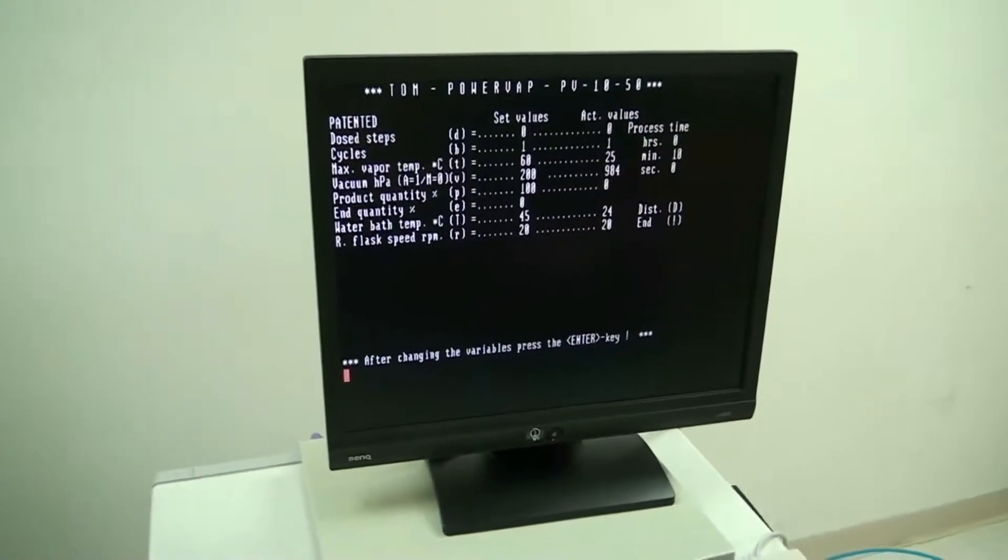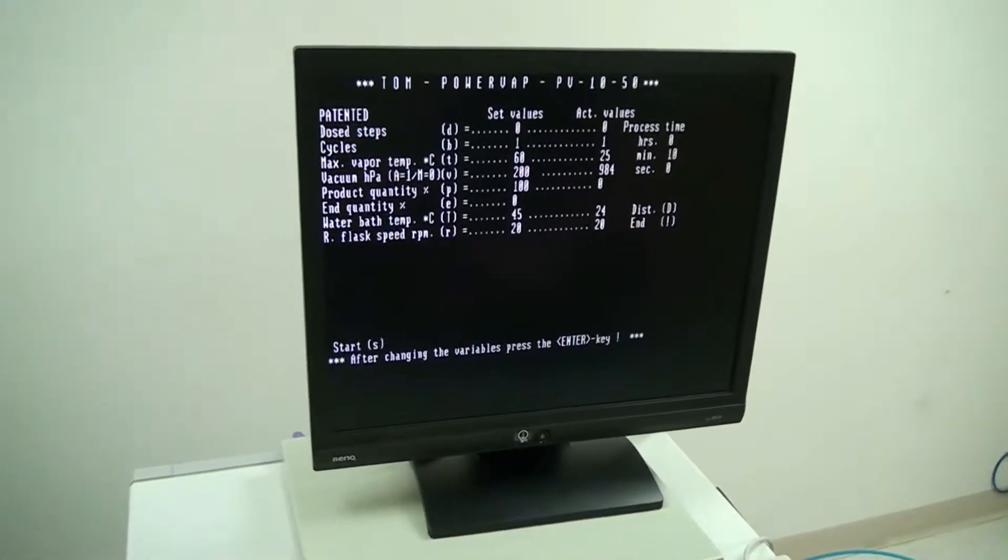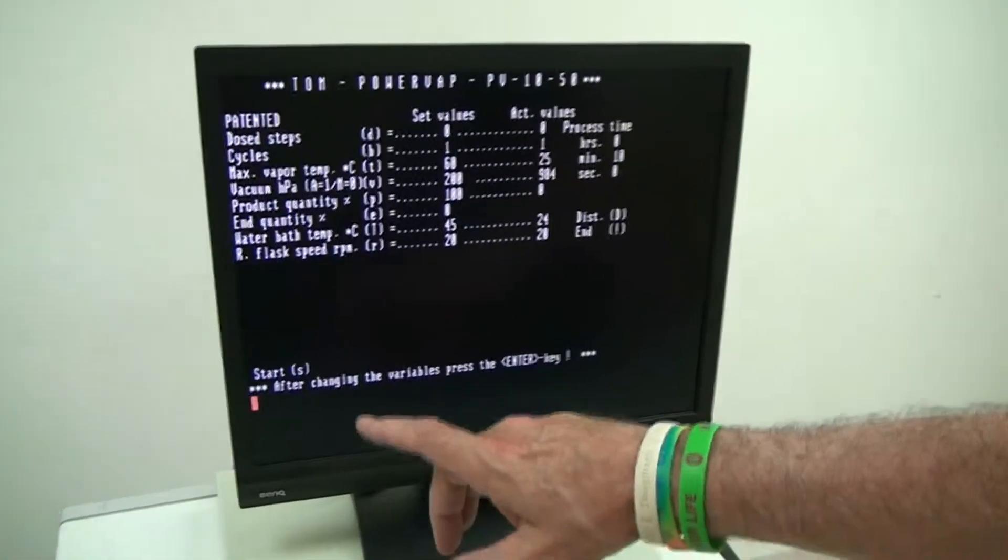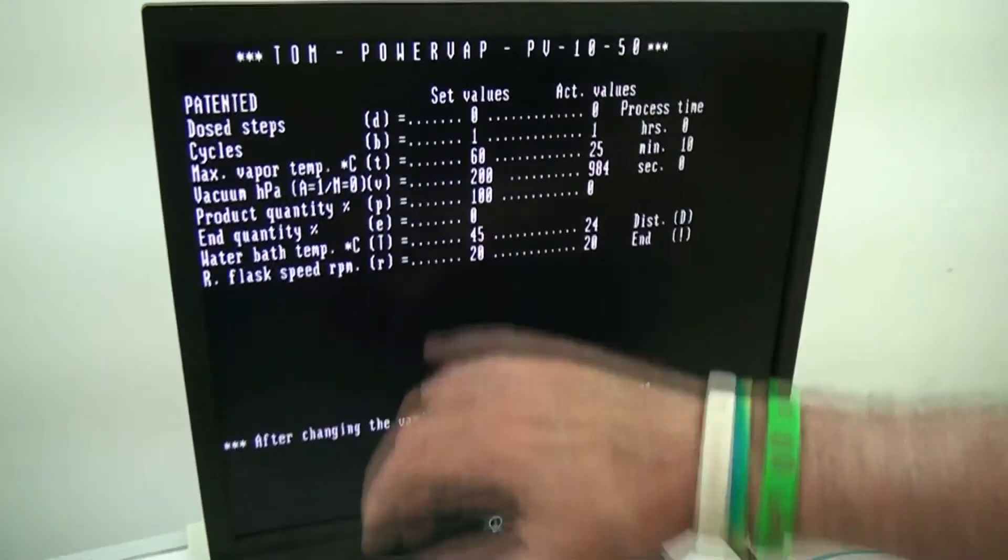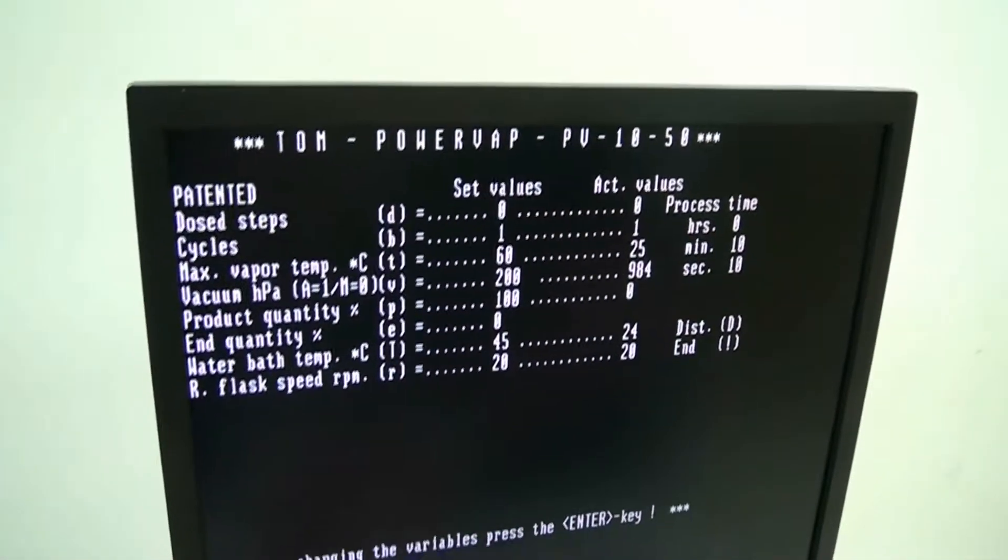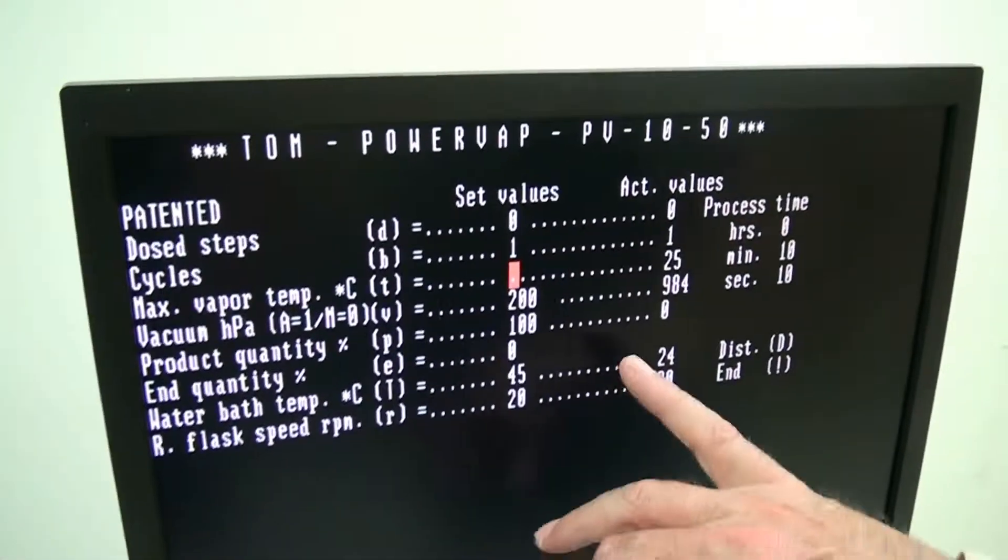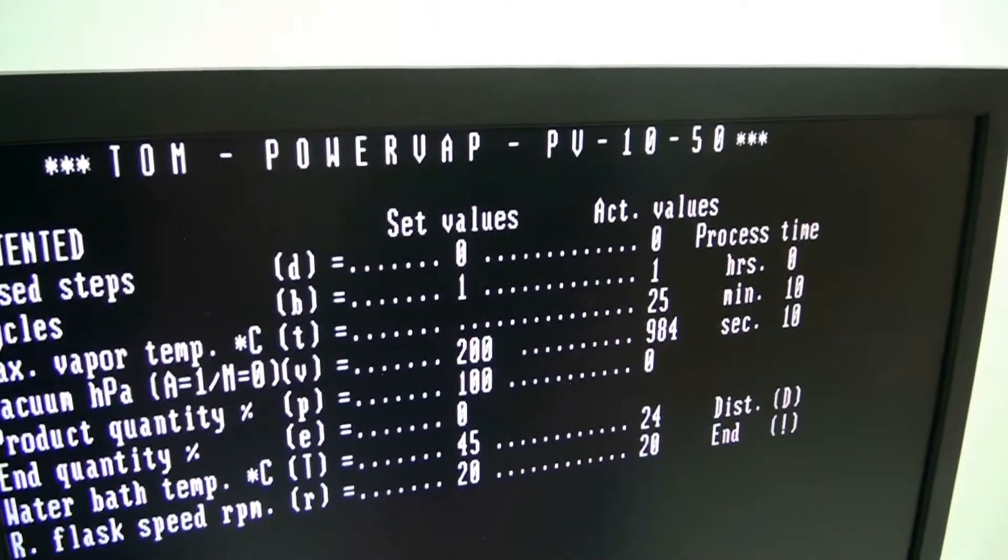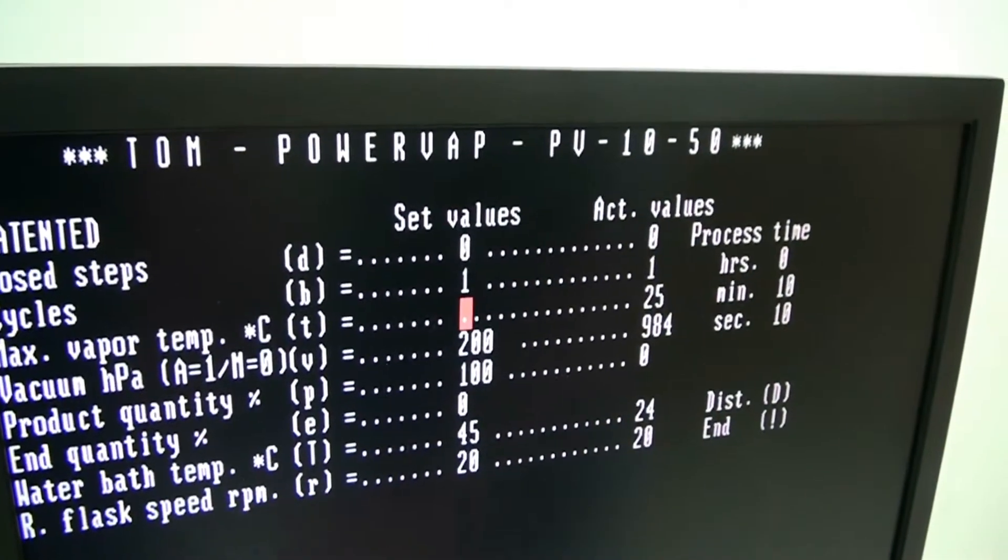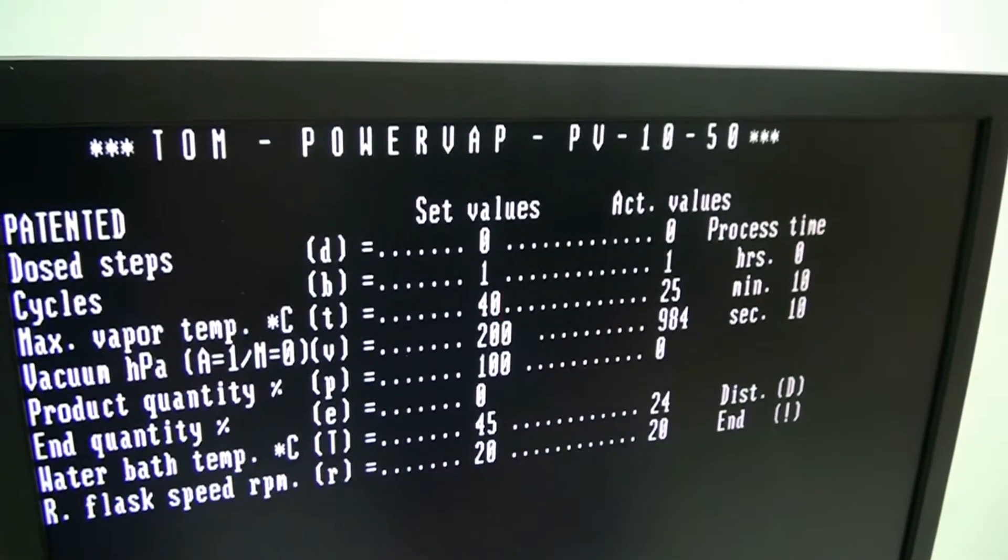Let's go ahead and set the vapor pressure down a little bit. We're running at 60, you might want to run that at a slightly lower value. Press the letter T, it enters into the max vapor pressure temperature setting. We're going to set it at 40, press enter, screen refreshes.